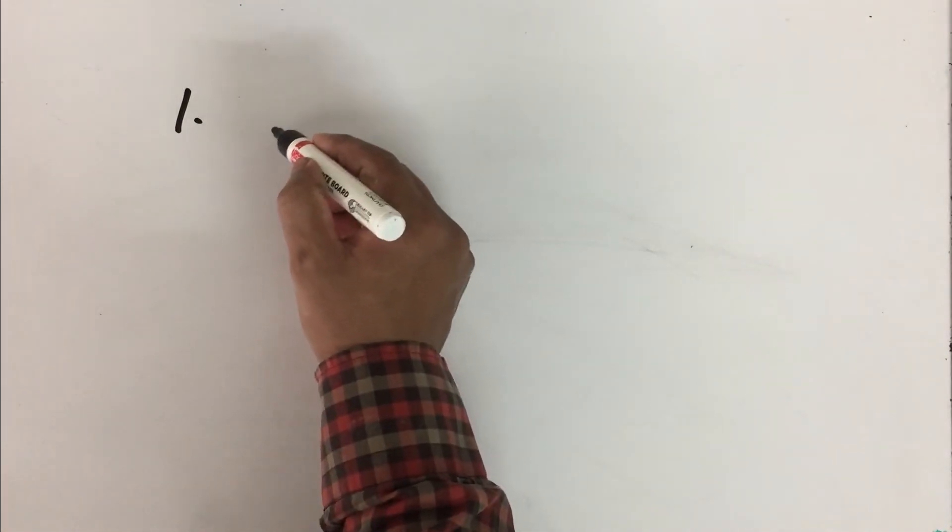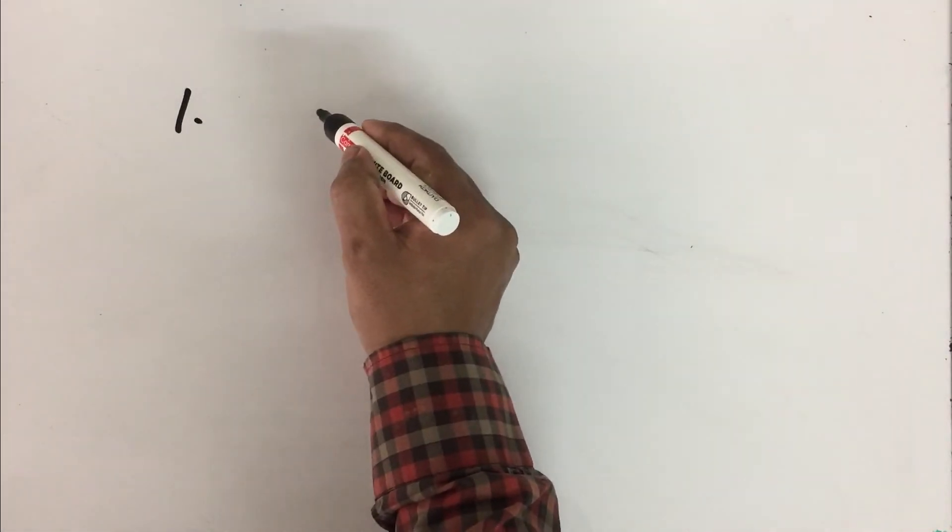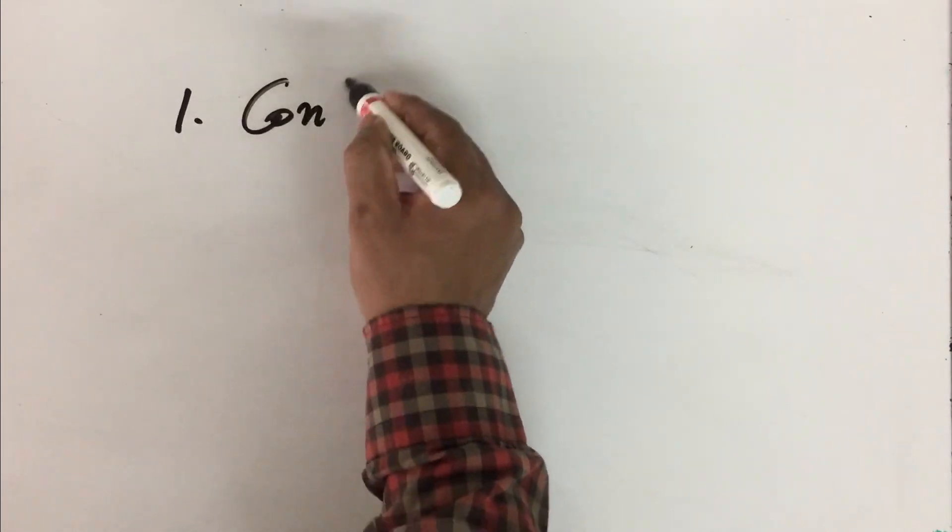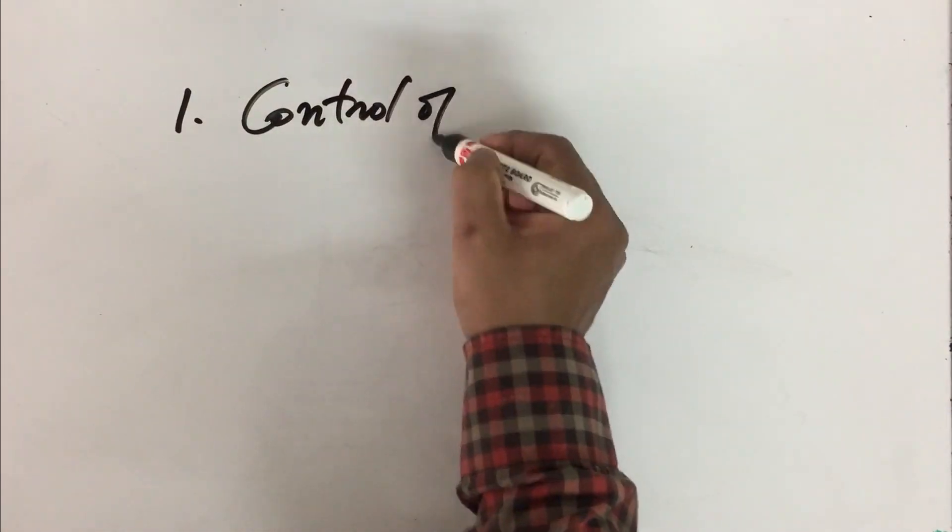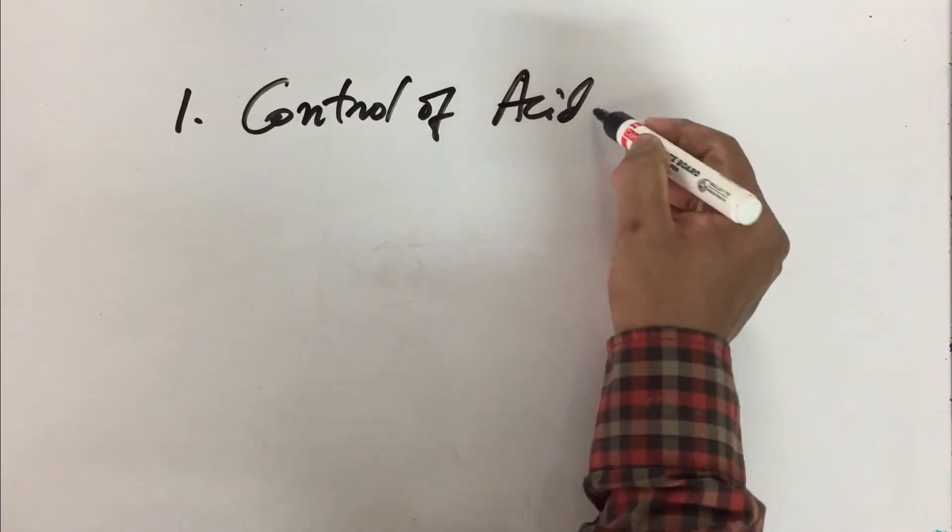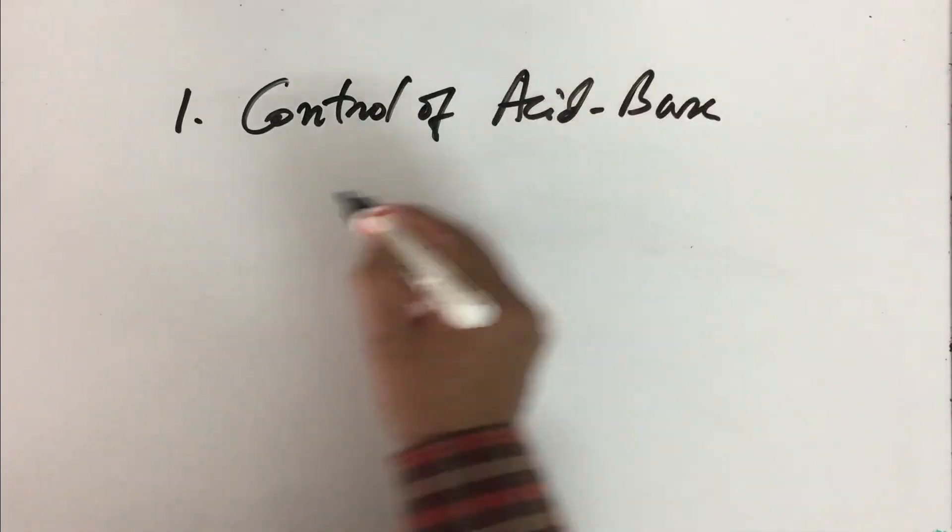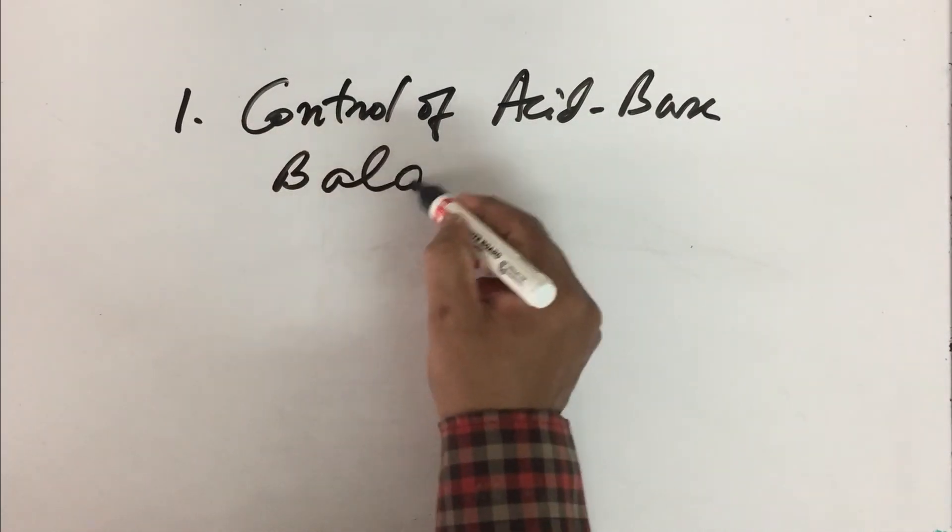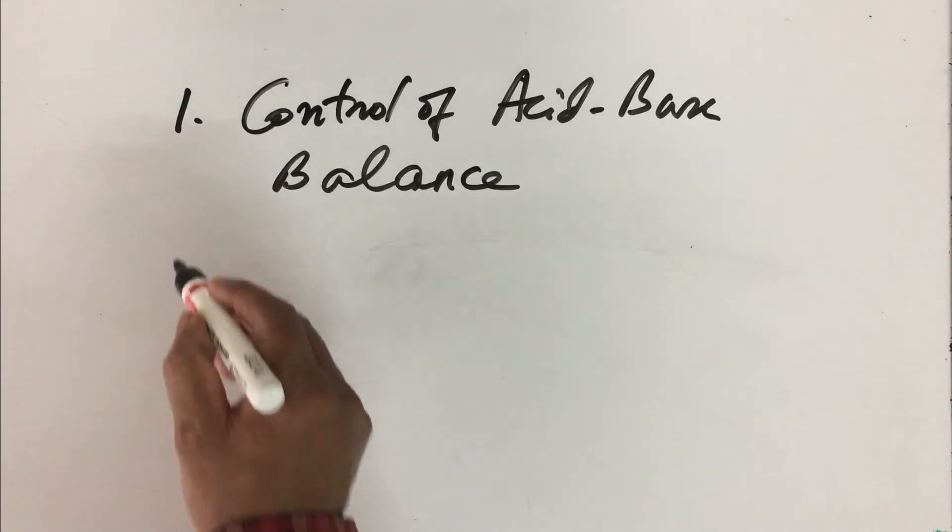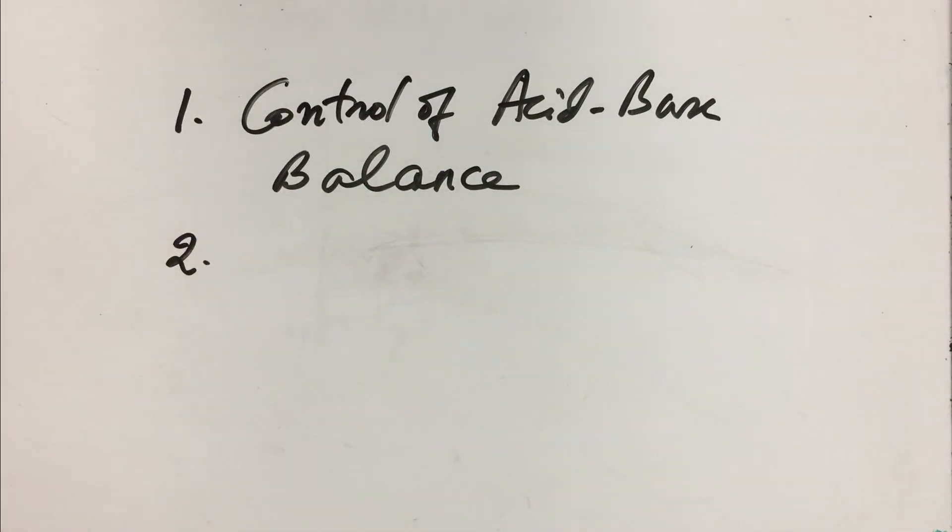So therefore the first function of metabolic role of gluconeogenesis is to deal with the control of acid-base balance. So this is effectively done with the help of gluconeogenesis. All the lactic acid will be converted back in liver into glucose.